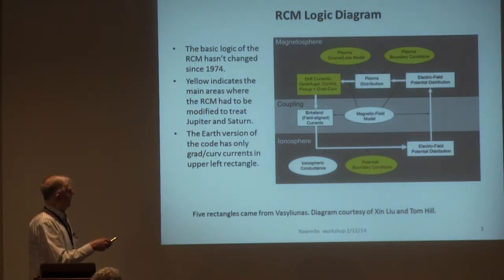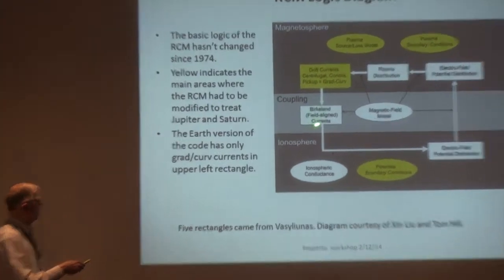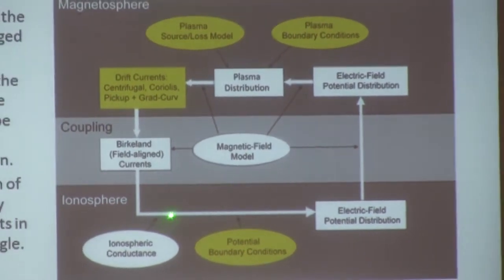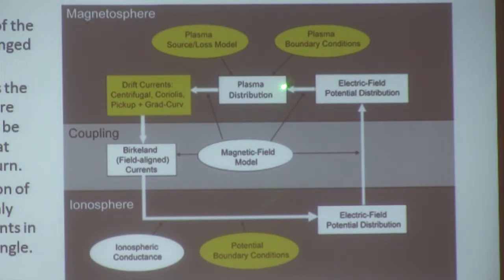If you start with the plasma distribution in the magnetosphere, we first calculate gradient curvature drift currents. In the Jupiter-Saturn version, which Tom Hill is going to talk about in a couple of days, there's also centrifugal drift and Coriolis and pickup currents, but for the Earth you don't need those. We take their divergence, calculate the Birkeland current, and that current rains down on the ionosphere. Given an ionosphere conductance model and a potential boundary condition, we calculate the potential distribution in the ionosphere. We map it back to the equatorial plane. Nowadays we use a time-dependent magnetic field model so that the induction electric field is included. Given the electric field and the magnetic field model, we calculate the drift velocity of the particles and advance the plasma distribution by a time step. In the modern RCM, this takes a second or two per time step.